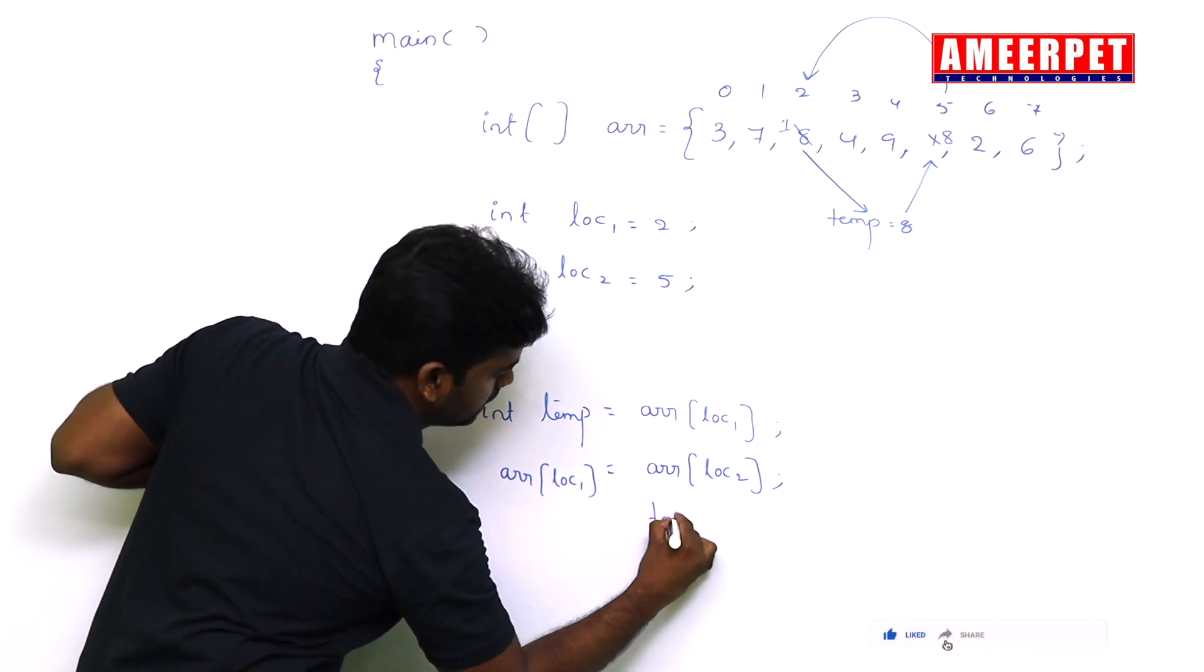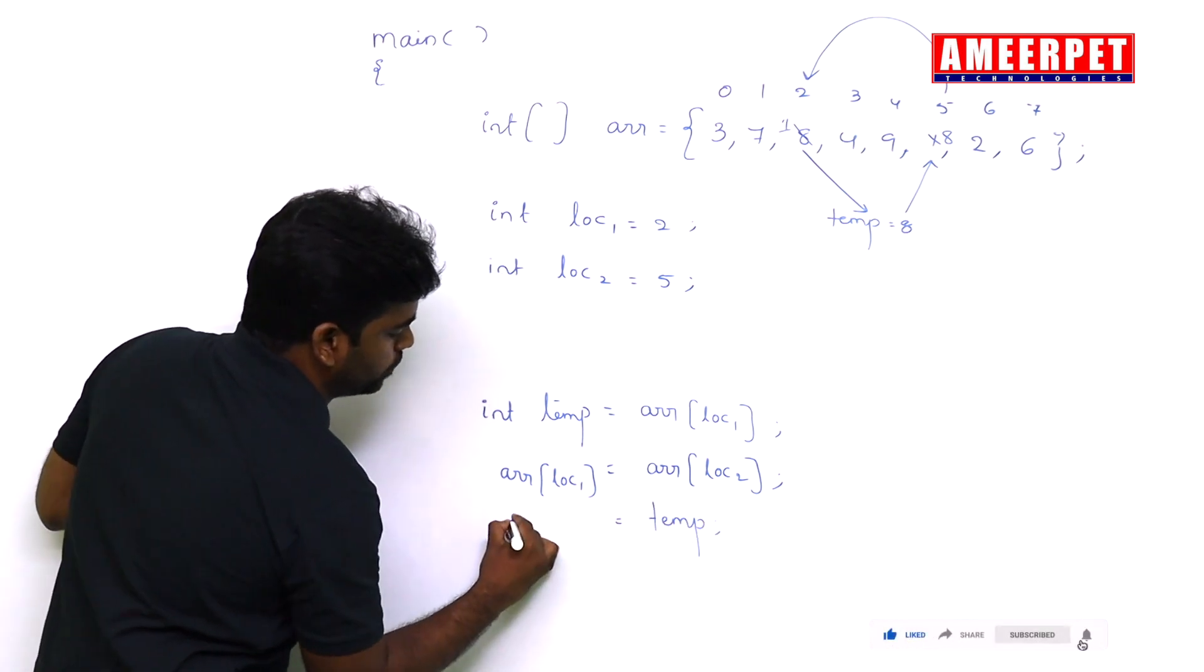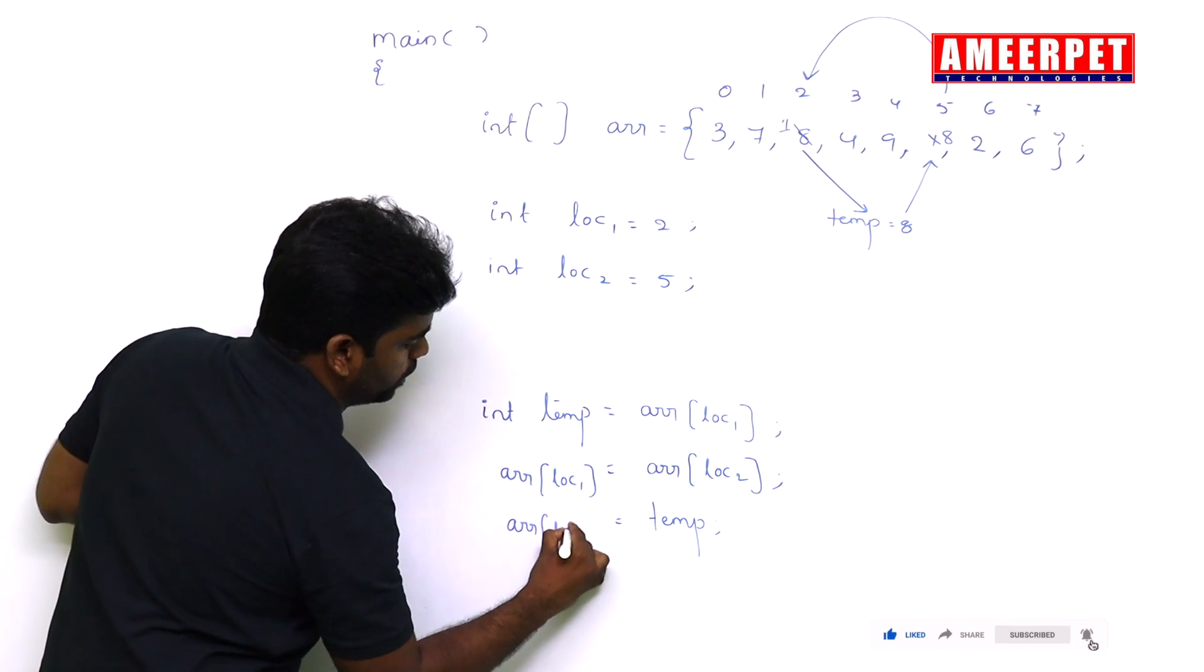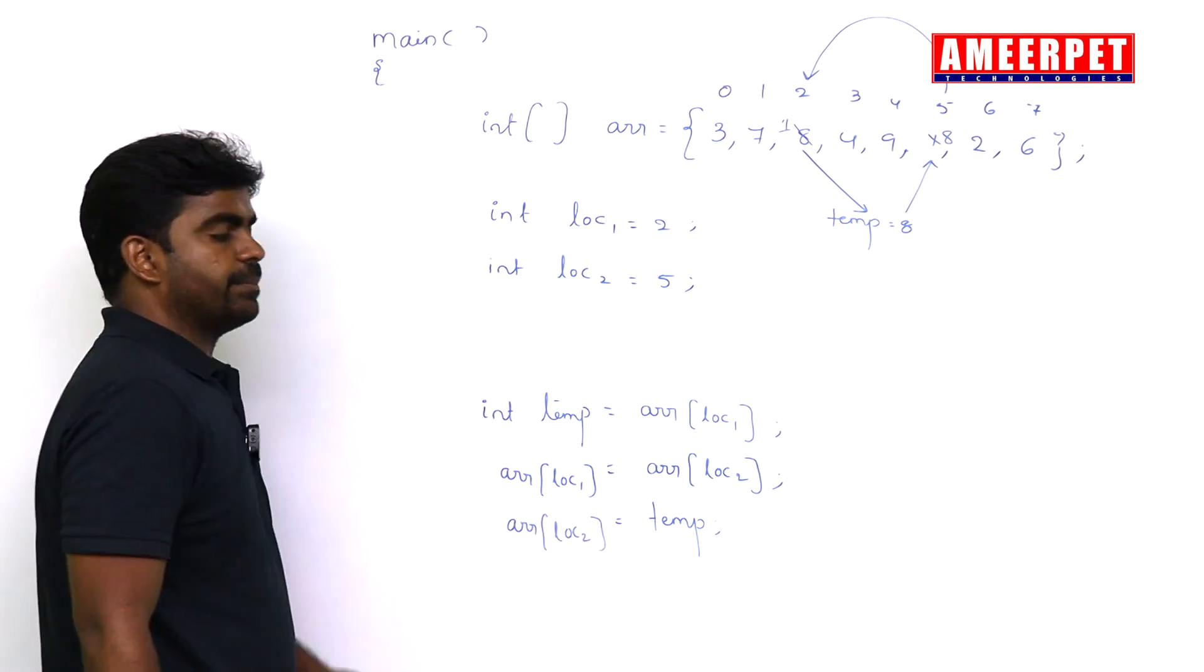Then simple, the temp value we are storing into ARR of location 2. This is swapping.